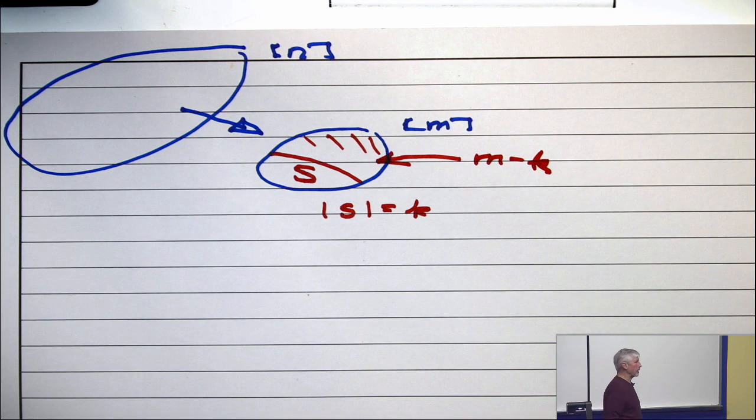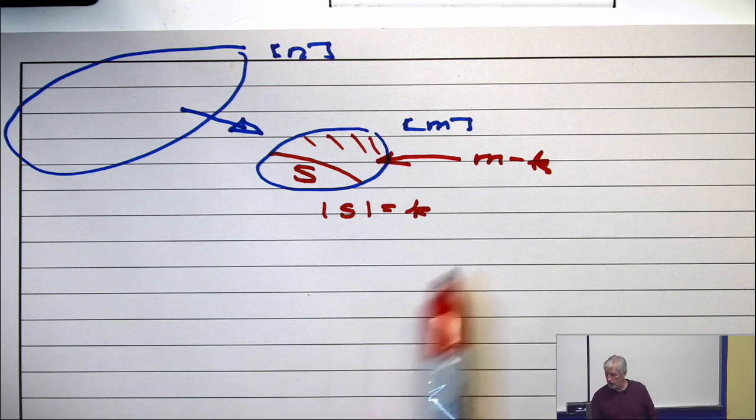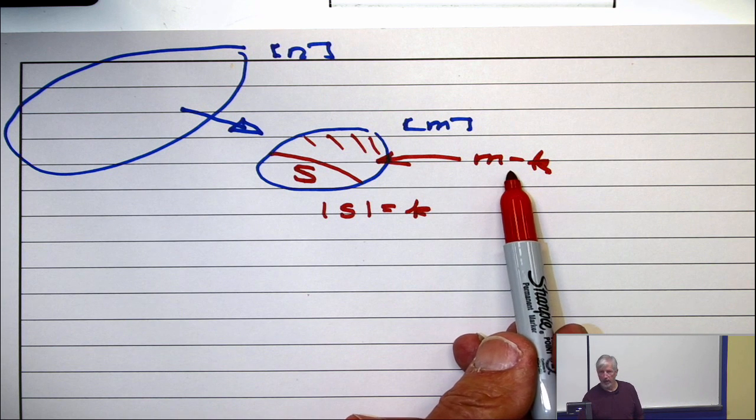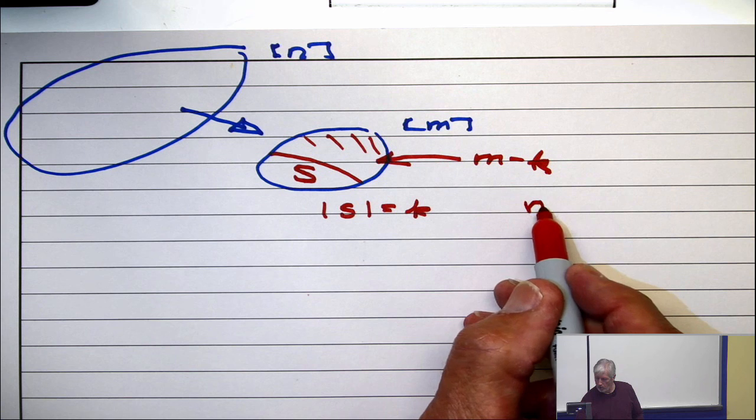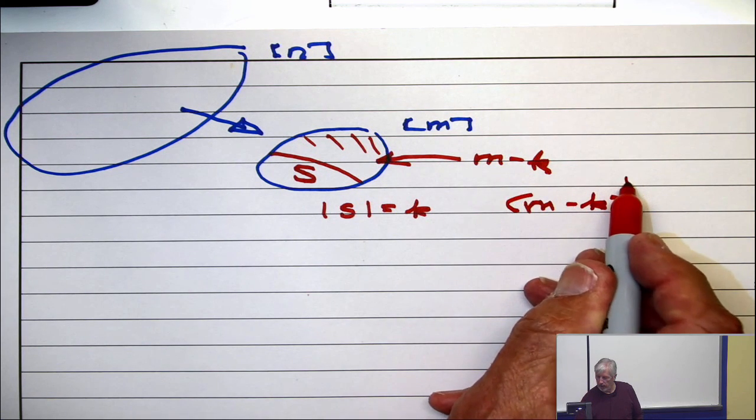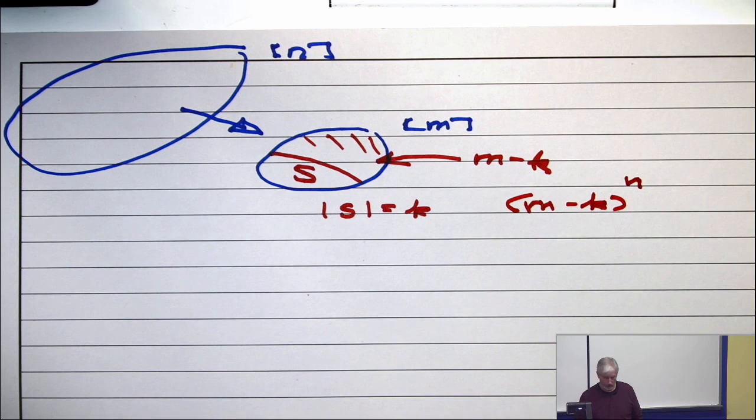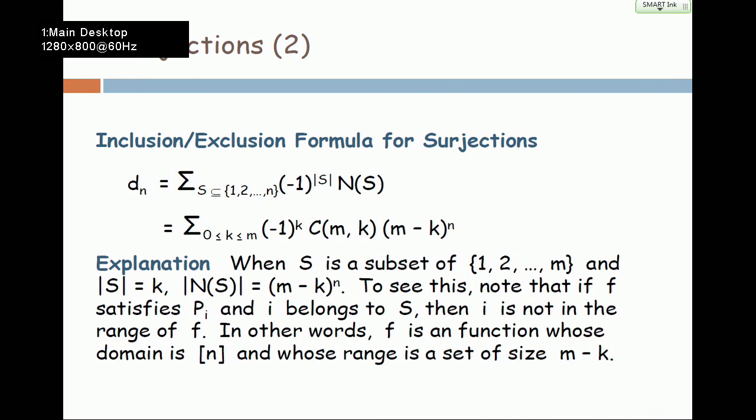And so now we go back to lecture 2 in this course. How many functions from an n element set to a set of this size? And the answer is m minus k to the n. So the number of such functions is m minus k to the nth power. And now we go back to the main slide, and that's exactly what's written.